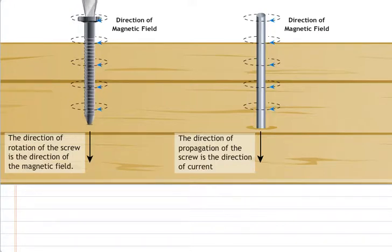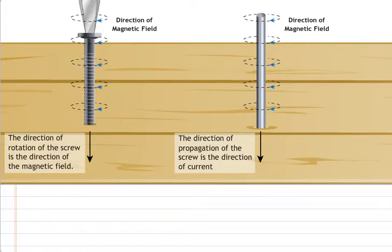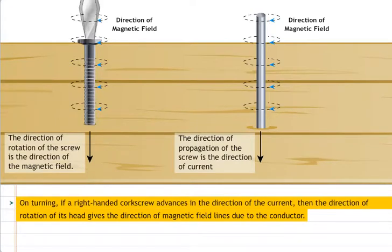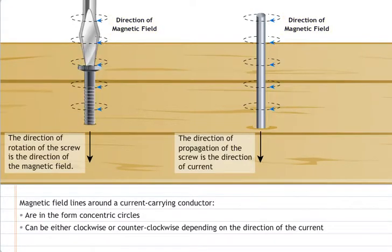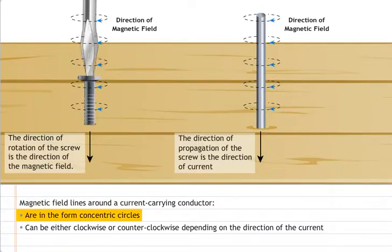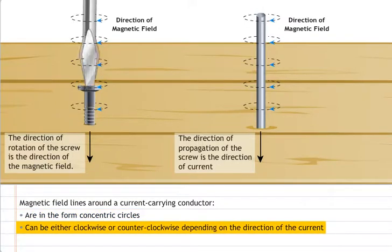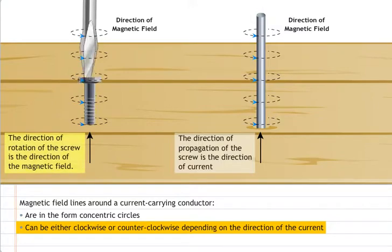This rule is also called Maxwell's corkscrew rule. Consider a right-handed corkscrew kept parallel to a current carrying conductor. On turning, if the screw advances in the direction of the current, then the direction of rotation of its head gives the direction of the magnetic field lines due to the conductor. Thus, magnetic field lines around a current carrying conductor are in the form of concentric circles and can be either clockwise or counterclockwise depending on the direction of the current.